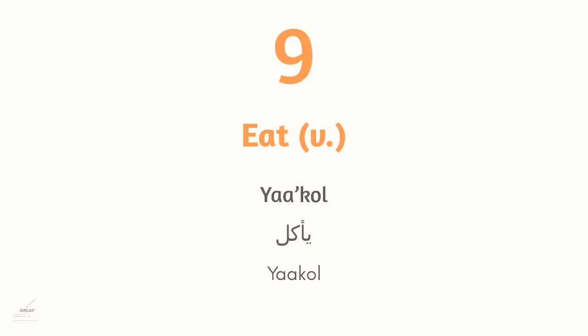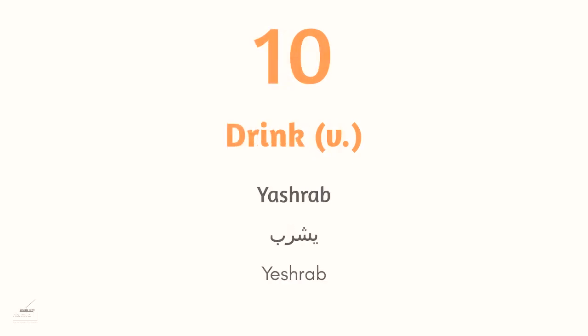The ninth word is the verb to eat: يأكل in Modern Standard Arabic. In Egyptian Arabic we don't pause in the middle — we say يأكل smoothly. The tenth word is to drink: يشرب in MSA. In Egyptian Arabic the vowel shifts and we say يشرب, with an E sound instead of A.